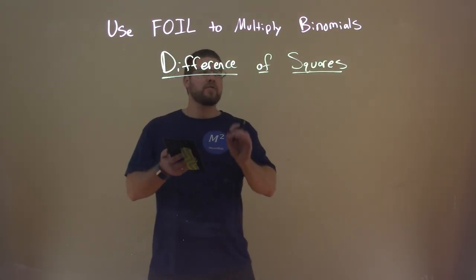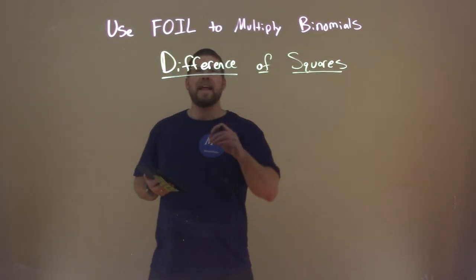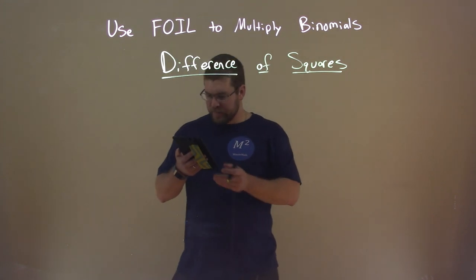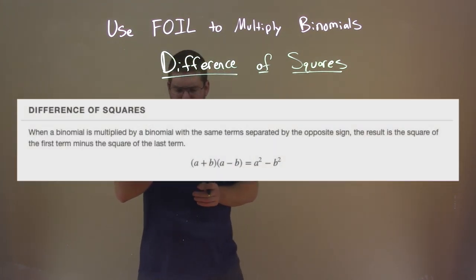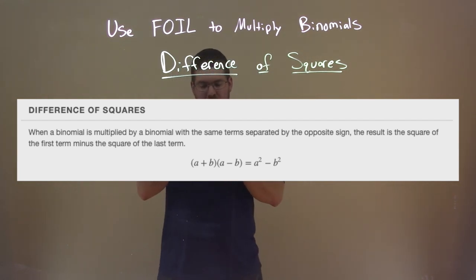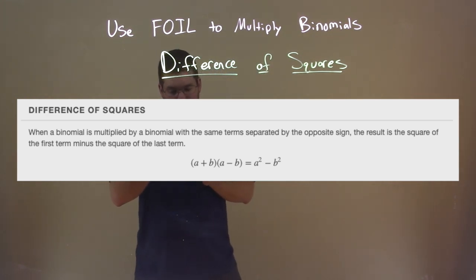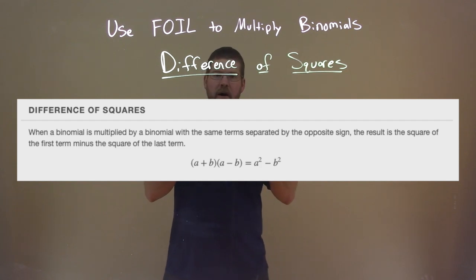The difference of squares formula is an adaptation of FOIL. It says: when a binomial is multiplied by a binomial with the same terms separated by the opposite sign, the result is the square of the first term minus the square of the last term.